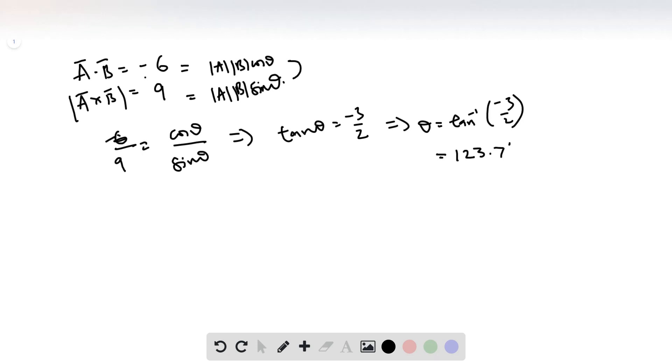Now, notice that mod A mod B are positive and now that A dot B is negative, it must mean that cos theta is negative. Similarly, sin theta must be positive for A cross B.